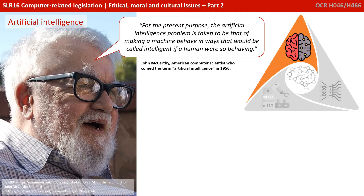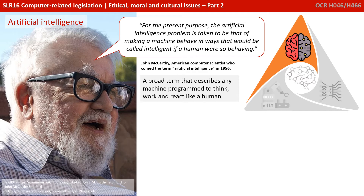John McCarthy is the American computer scientist who first coined the term artificial intelligence in 1956. He said: 'For the present purpose, the artificial intelligence problem is taken to be that of making a machine behave in ways that would be called intelligent if a human were so behaving.' It's a broad term that describes any machine programmed to think, work or react like a human.